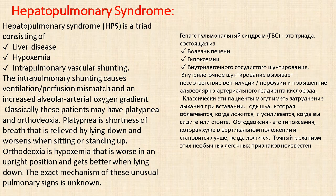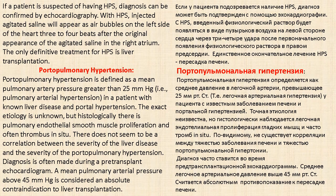Hepatopulmonary syndrome is a triad of liver disease, hypoxemia, and intrapulmonary vascular shunting. The intrapulmonary vascular shunting causes ventilation-perfusion mismatch and increased alveolar-arterial oxygen gradient. Classically, these patients may have platypnea — shortness of breath relieved by lying down and worsened when sitting or standing — and orthodoxia, which is hypoxemia worse in the upright position and better when lying down. Diagnosis can be confirmed by echocardiography with agitated saline, appearing as air bubbles on the left side of the heart three to four beats after the right atrium. The only definitive treatment is liver transplantation.